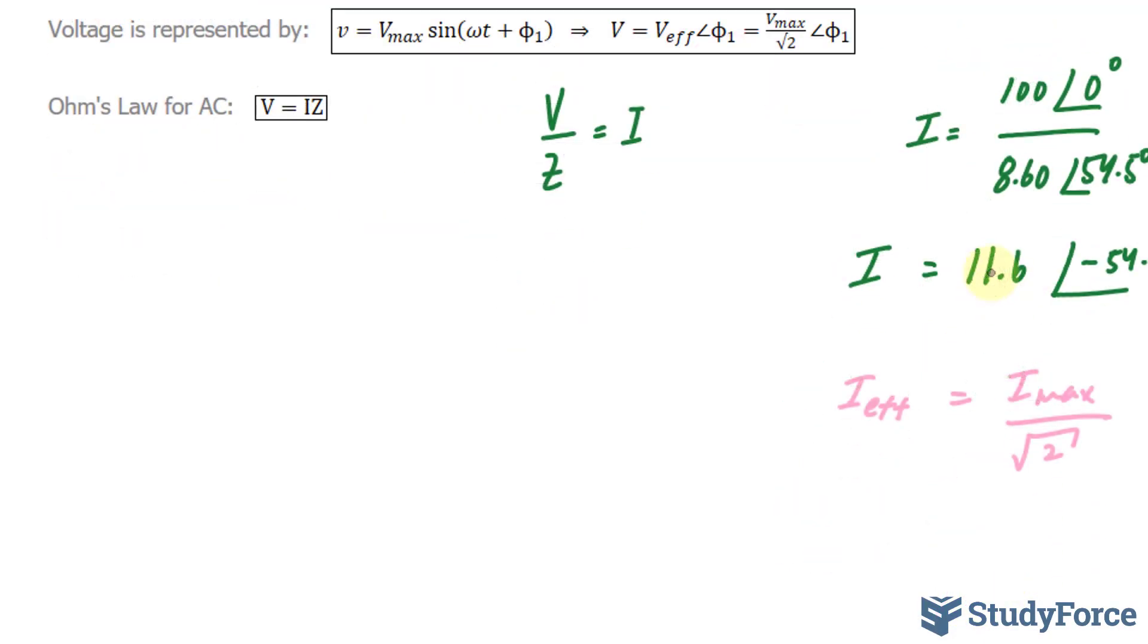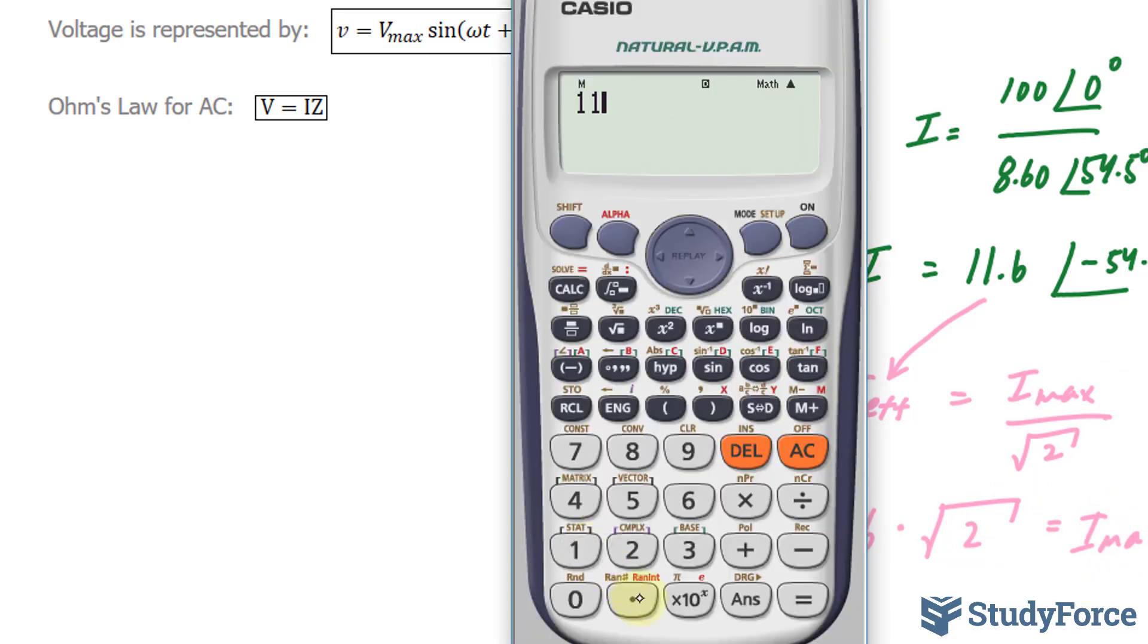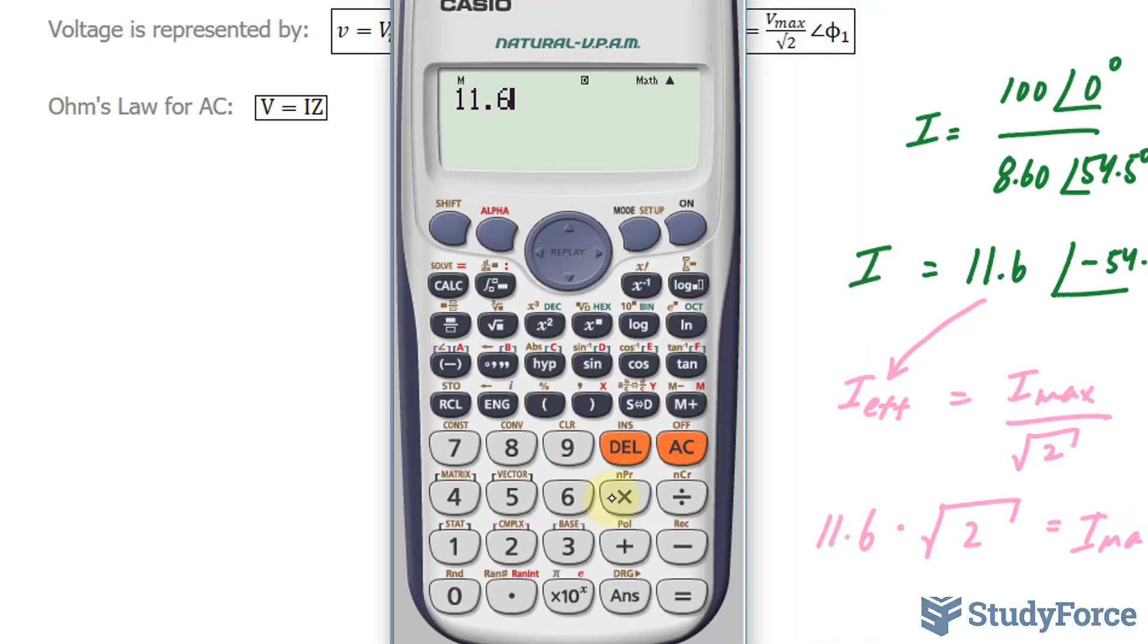This number represents the effective current. To find I_max, we multiply both sides by the square root of 2, which gives us I_max. Using our calculator, 11.6 times the square root of 2 gives approximately 16.4.